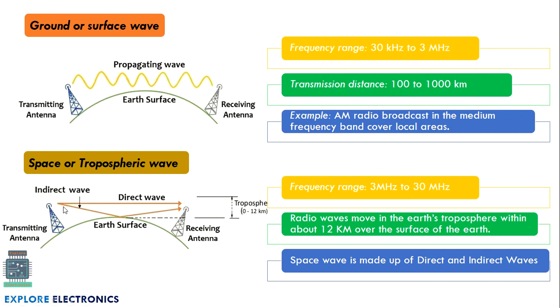One is a direct wave. If the transmitting antenna and receiving antenna communicate through a straight line, we call it a direct wave. If the signal hits the earth, takes a deviation, and reaches the receiver antenna, we call it an indirect wave. These two kinds of transmission can occur in tropospheric wave or space wave.